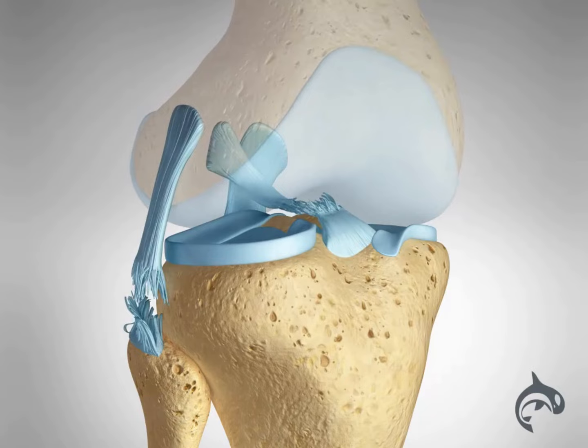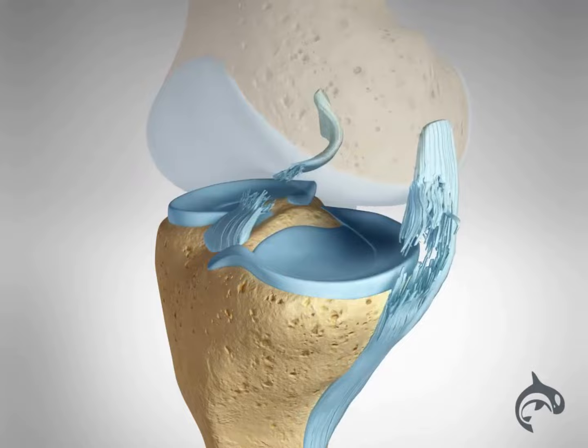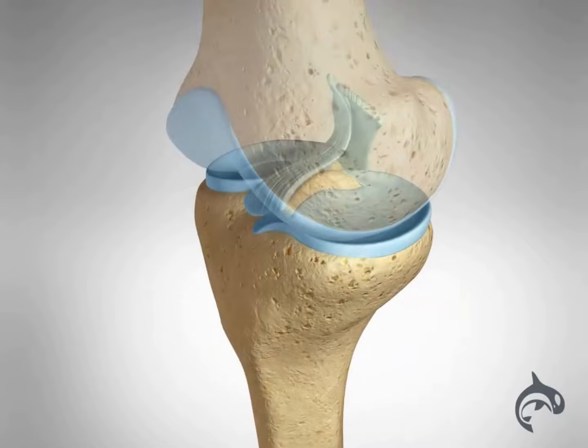Multiple ligament injuries involve two or more of the main knee ligaments and occur from significant knee trauma. This can include injuries like an ACL-MCL rupture or an ACL-PCL rupture, all of which can seriously compromise joint stability.